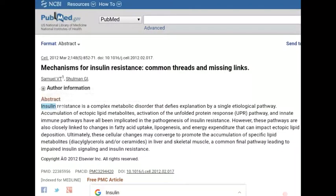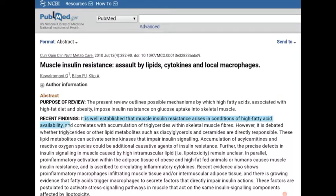Let's try to cut through some of the reductionism and deception by reading directly from the peer-reviewed research. Insulin resistance is a complex metabolic disorder that defies explanation by a single etiological pathway. It is well established that muscle insulin resistance arises in conditions of high fatty acid availability. That's fat in your bloodstream. Where does that fat come from? Maybe it's the fat you eat.